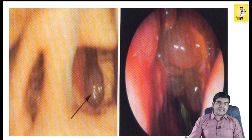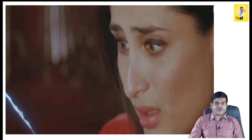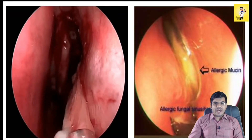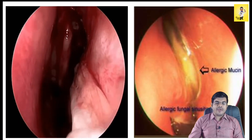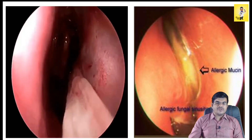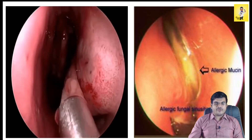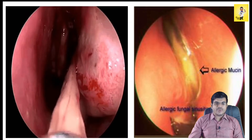The characteristic feature of AFRS is the presence of a thick, tenacious mucus plug which is very sticky — known as allergic mucin. Along with that, the patient will have severe hyposmia because of the extensive nasal polyposis present.